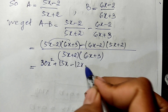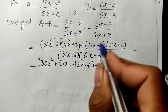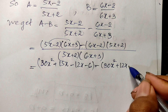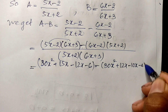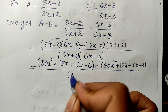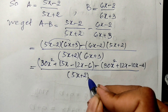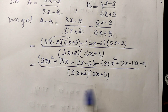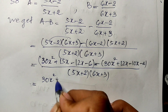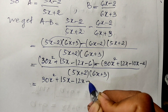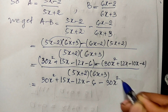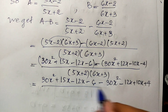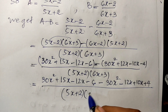Continuing the expansion with the minus sign multiplied in, I get 38x minus 4 divided by (5x + 2)(6x + 3). Expanding further: 6x plus 15x plus 15x minus 12x minus 6, minus 6x minus 8x plus 10x plus 4, all divided by (5x + 2)(6x + 3).